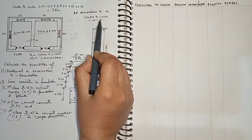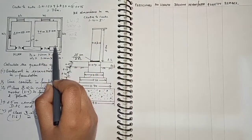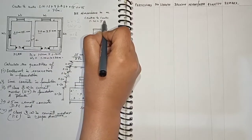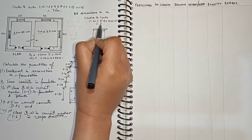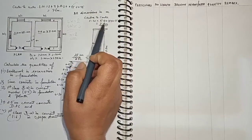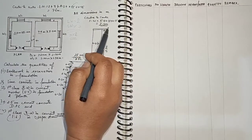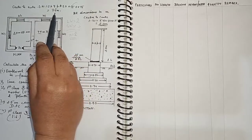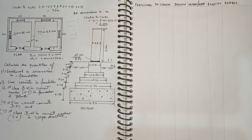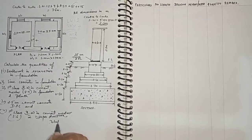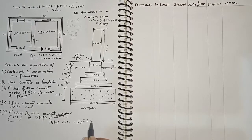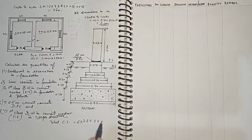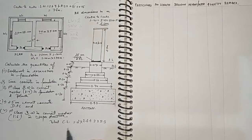For the short wall: 5 meters plus 0.15 plus 0.15 equals 5.3 meters. So center to center short wall length is 5.3 meters and center to center long wall length is 7.6 meters. Total center line length equals number of long walls (2) × 7.6 plus number of short walls (3) × 5.3.